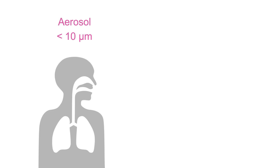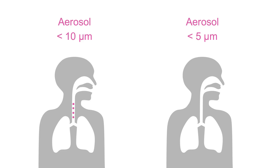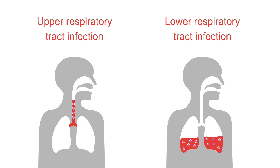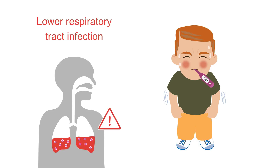Airborne particles smaller than 10 micrometers can penetrate down below the glottis, whereas particles smaller than 5 microns can penetrate all the way down into the alveolar space. Particles that penetrate deeper into the lungs can cause pneumonia, whereas particles that penetrate into the upper respiratory tract can cause upper respiratory tract infections like bronchitis. Pneumonia can be a much more severe and debilitating disease. Severely affected symptomatic patients with COVID-19 tend to have pneumonia rather than upper respiratory tract disease, indicating that the virus penetrates deep down into the lungs via very small airborne particles.